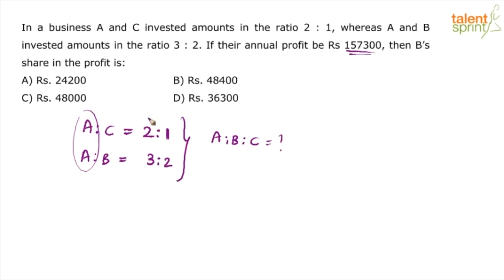So, 2 should be multiplied by 3. If 2 is multiplied by 3, it becomes 6. But when 2 is multiplied by 3, 1 should also get multiplied by 3. If you have multiplied the numerator by 3, denominator should also get multiplied by 3. So, A is to C, which was 2 is to 1 becomes 6 is to 3. Similarly, 3 is to 2 becomes 6 is to 4. Multiply by 2 here on both sides.